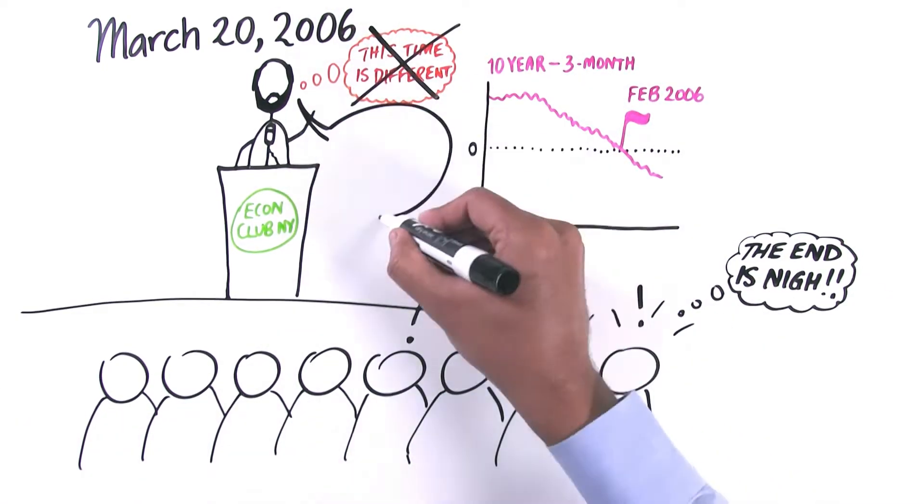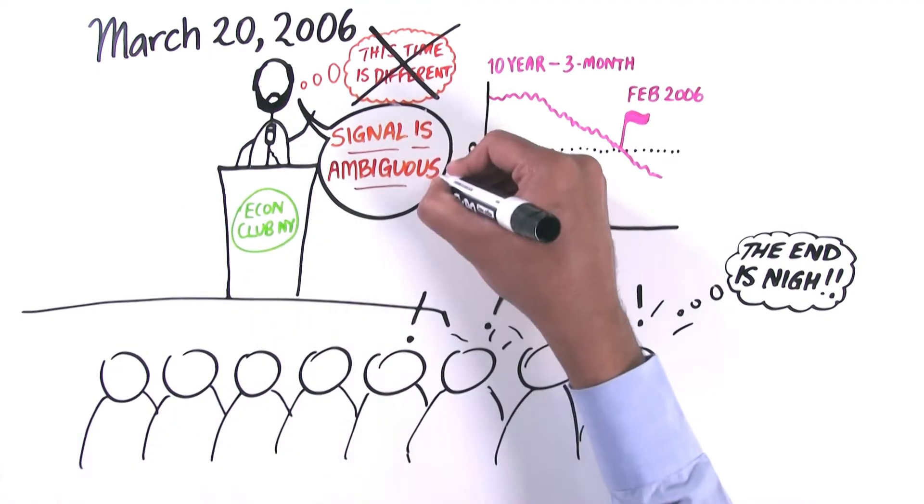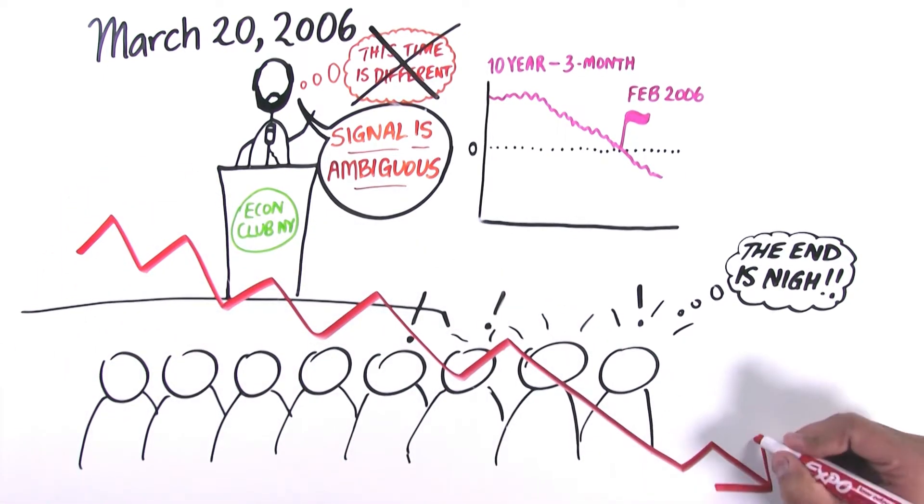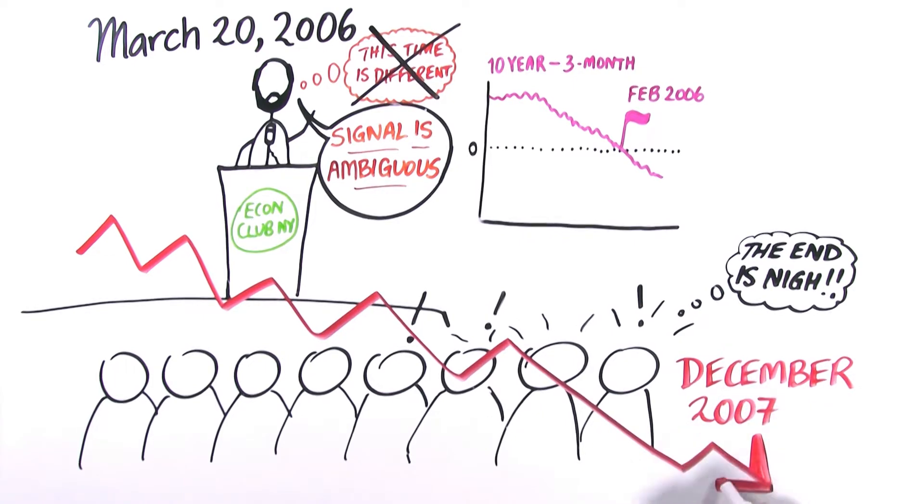Bernanke concluded no. But to be fair, he didn't exactly say this time is different. He just said that the signal from the yield curve was ambiguous. As we all know now, the recession began just 18 months after Bernanke left the podium in December of 2007, and it was the worst recession of the post-war era.